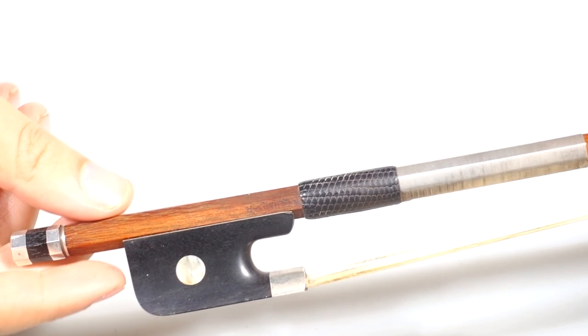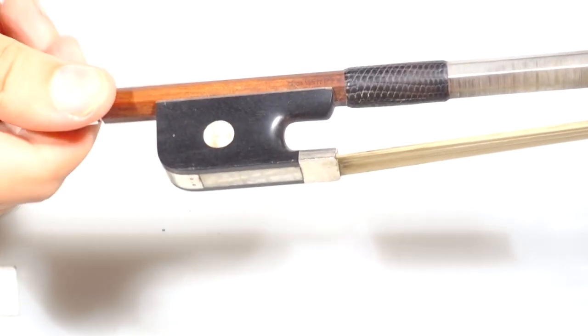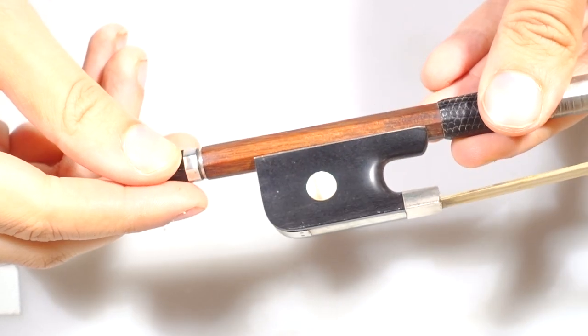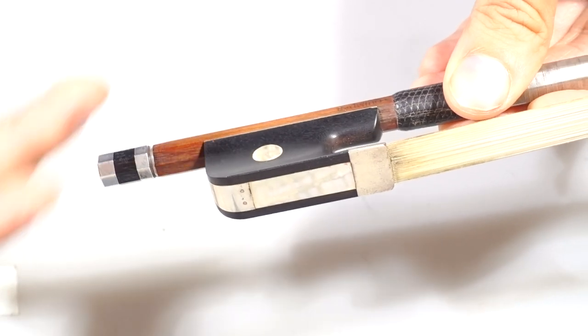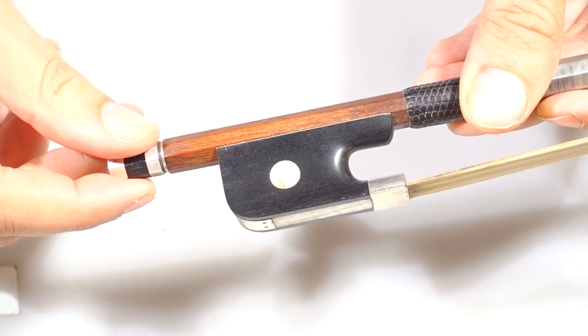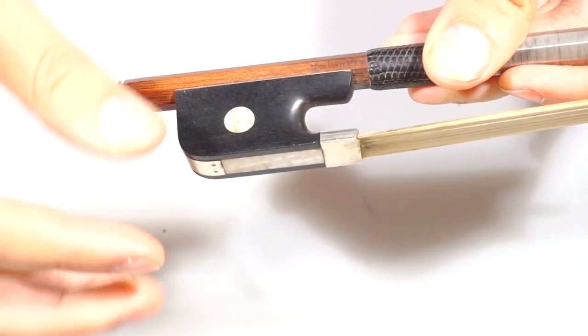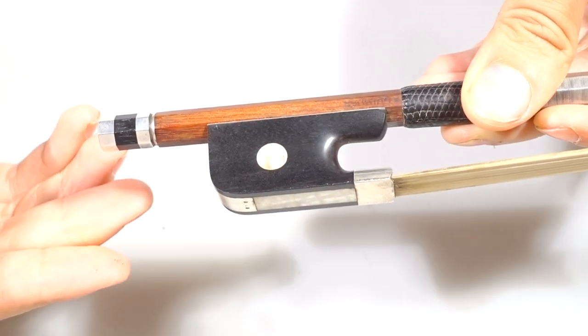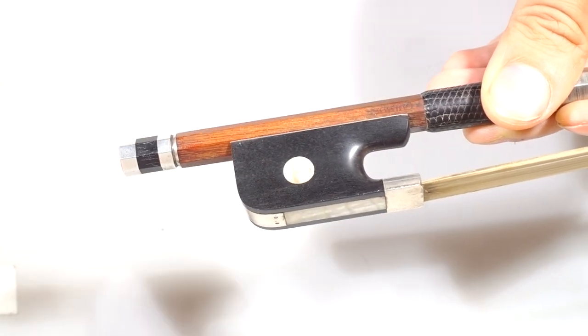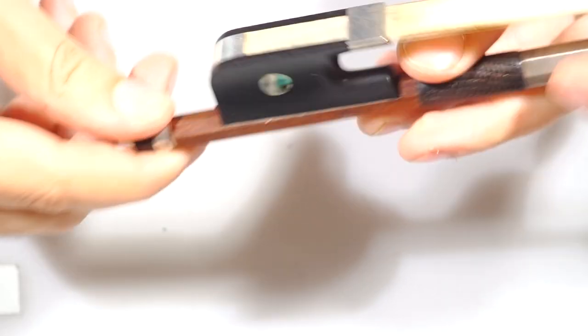So this is an almost new bow, but still you can see this small gap. And the gap is mostly due because the wood has bent a bit. But still, now you have to ask yourself, do I need to do something about it? And if the frog is sitting very well on the stick, if it doesn't wobble, then you don't have to do anything about it and it's normal. It's within parameters.